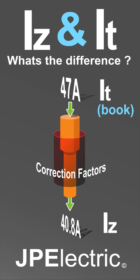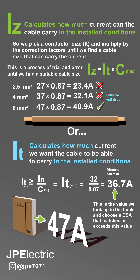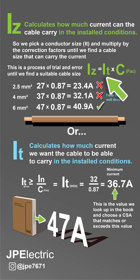What's the difference between IZ and IT? IZ calculates how much current the cable can carry. So we pick a conductor size and multiply by the correction factors until we find a size that can carry that current.